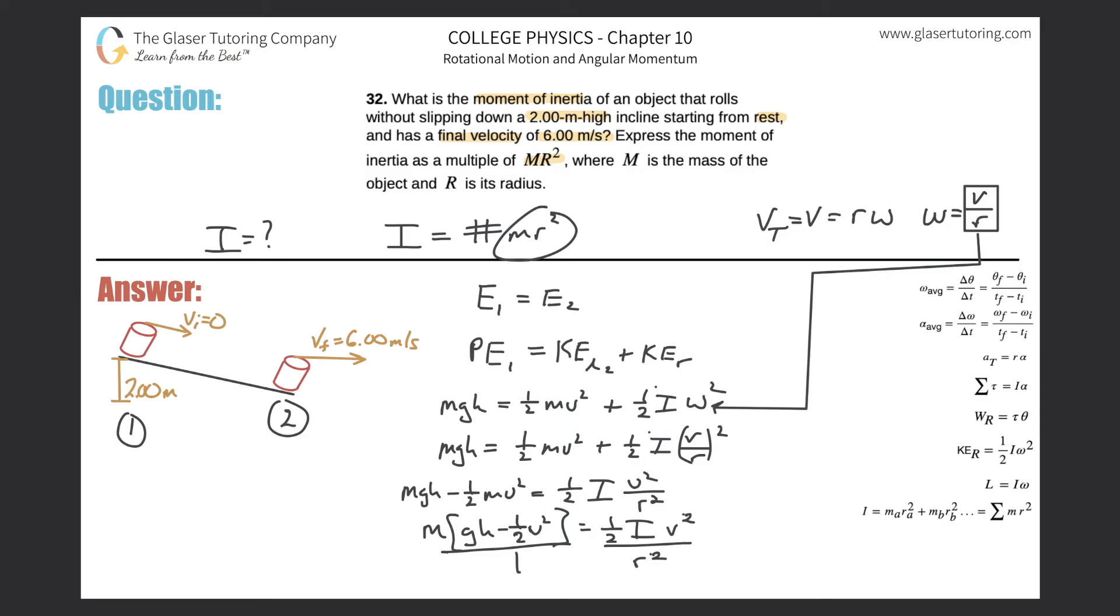I didn't have to do this step, you could do it all at once. I'm doing it for those who might struggle with the algebra. Now solve for I: get rid of all the terms connected to I. Multiply by two and divide by v².